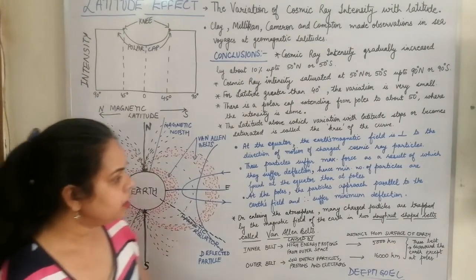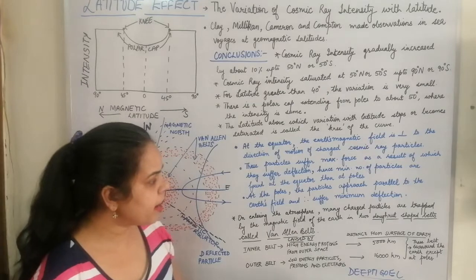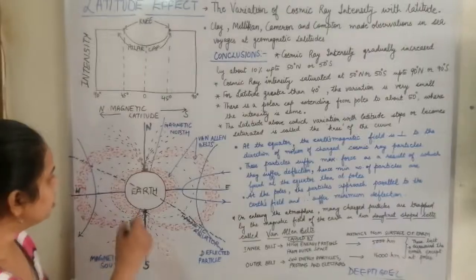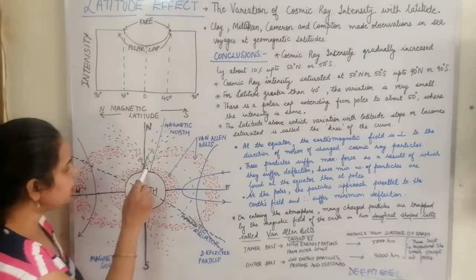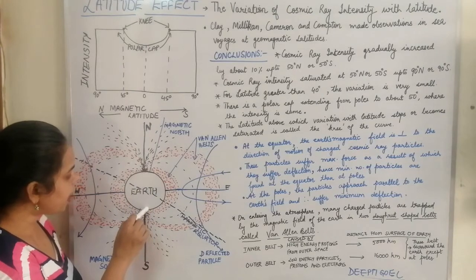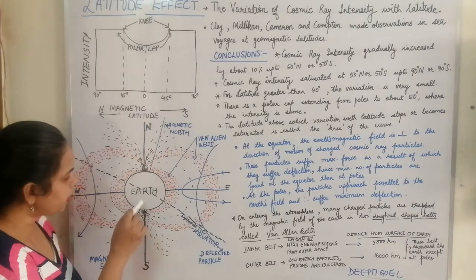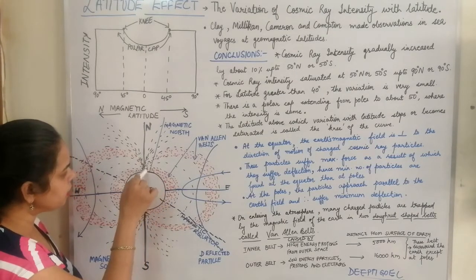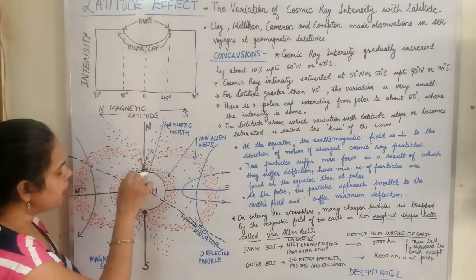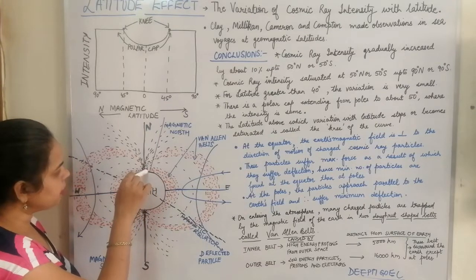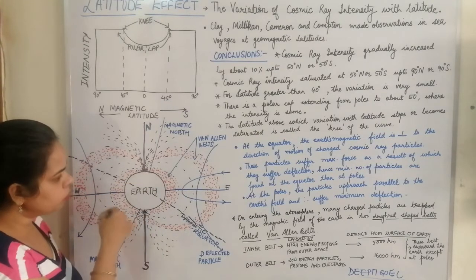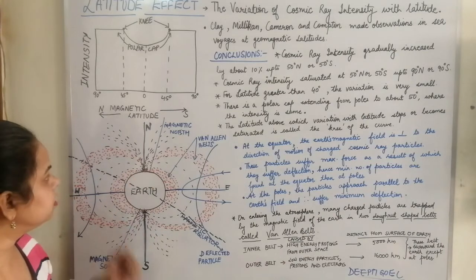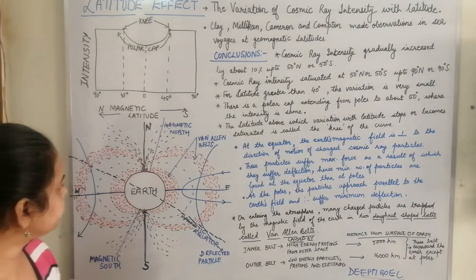These belts surround the earth except at the poles. At the pole point there is no Van Allen belt — the Van Allen belt particles are not present at the pole points. They only surround the earth except at the pole points.